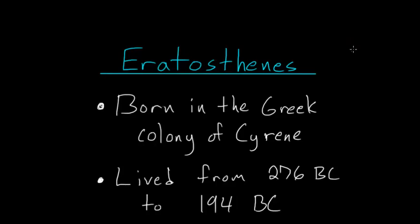So Eratosthenes was born in the Greek colony of Cyrene, which is in modern day Libya, and he lived from 276 BC to 194 BC, which puts him in the same time period as Archimedes, who he was apparently friends with.